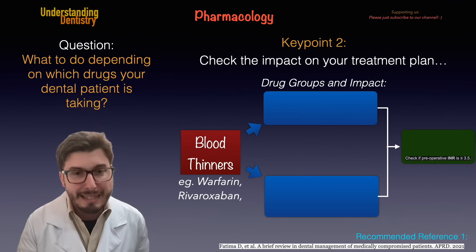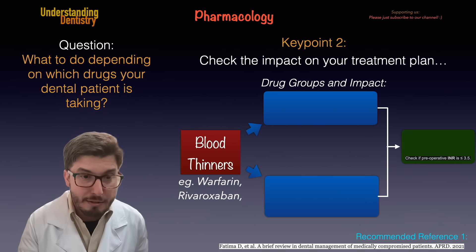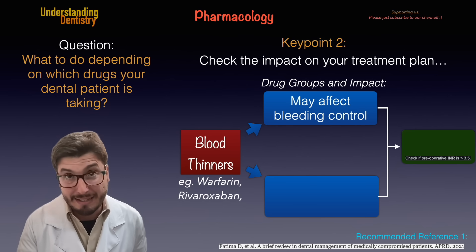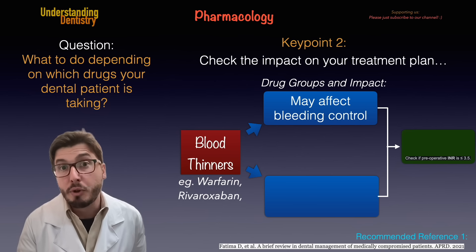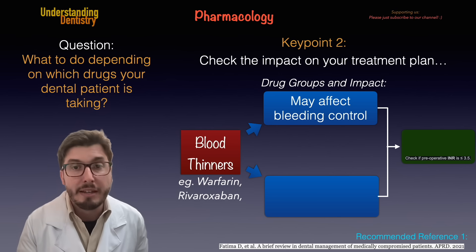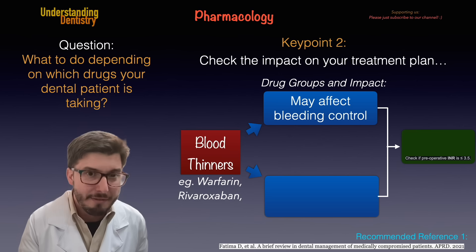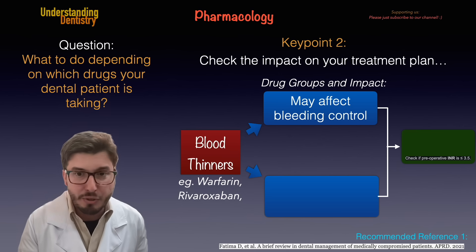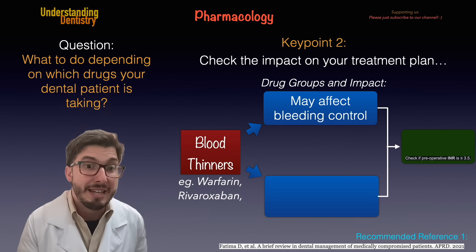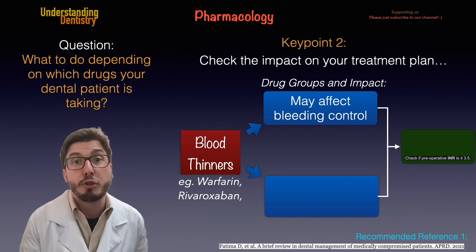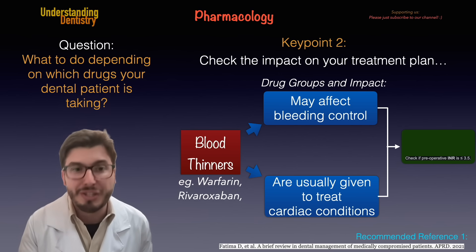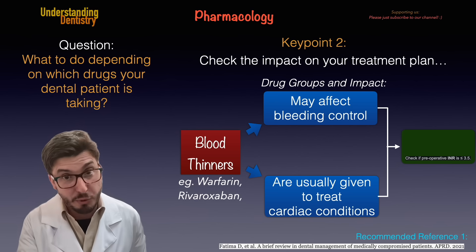Now let's see the specific blood thinners. We have warfarin and rivaroxaban, and they have some impacts on our dental treatments. They may affect bleeding control. You are going to check the INR of the patient — it should be lower than 3.5, though other articles describe other limits as well. You need to decide on an individual basis depending on the procedure. Don't forget that they are usually given to treat cardiac conditions, and this might affect your dental treatment.